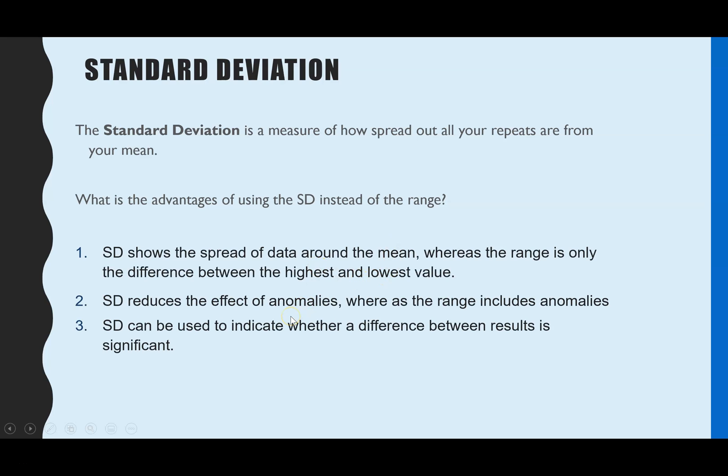Here are your three key reasons why standard deviation is more useful than range. Number one, standard deviation shows the spread of data around the mean whereas the range only shows the highest and the lowest. Now because the range only shows the highest and the lowest it includes anomalies and those anomalies have a big impact. Whereas standard deviation because it's considering how spread out all the repeats are compared to the mean, the effects of anomalies are reduced.